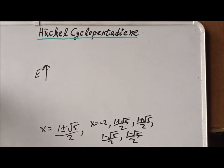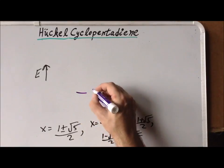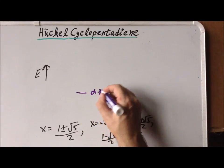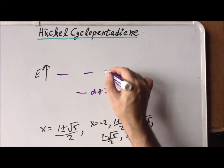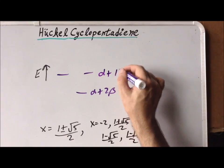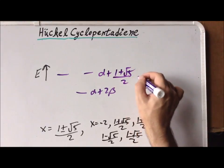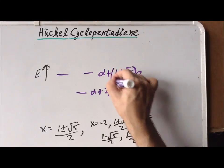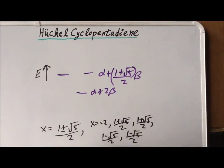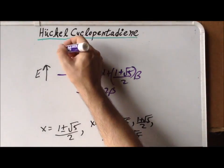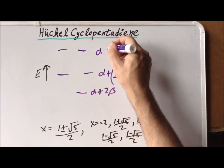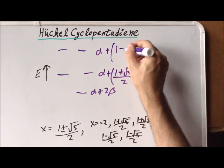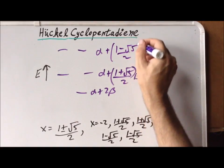This gives the following energies for our system. The ground state has energy equal to alpha plus two beta. Then we have a doubly degenerate state with energy alpha plus (1 + √5)/2 times beta. Last but not least, we have another doubly degenerate pair of states with energy alpha plus (1 − √5)/2 times beta.